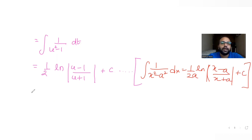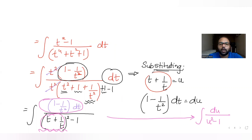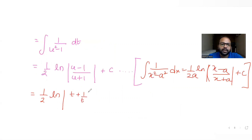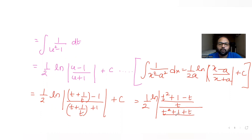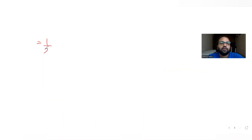Resubstituting u as t plus 1 by t, we get half log to the base e of (t plus 1 by t minus 1) upon (t plus 1 by t plus 1). Simplifying the numerator: t plus 1 by t minus 1 becomes (t squared minus t plus 1) upon t, and the denominator becomes (t squared plus t plus 1) upon t. The t's cancel, leaving half log to the base e of (t squared minus t plus 1) upon (t squared plus t plus 1).